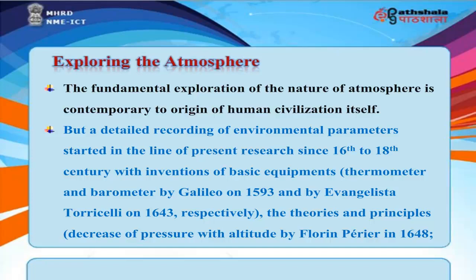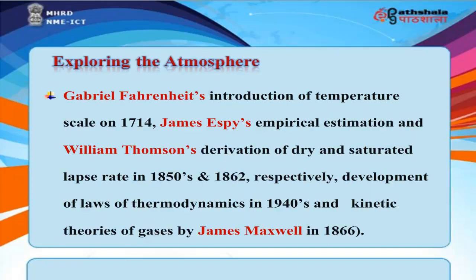The Theories and Principles: Decrease of Pressure with Altitude by Florent Perrier in 1648; Gabriel Fahrenheit's introduction of a temperature scale in 1714; James S. Pye's Empirical Estimation and William Thompson's Derivation of Dry and Saturated Lapse Rate in the 1850s and 1862, respectively; and Development of Laws of Thermodynamics in the 1940s and Kinetic Theories of Gases by James Maxwell in 1866.